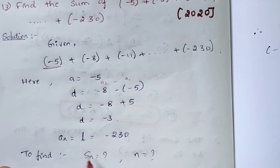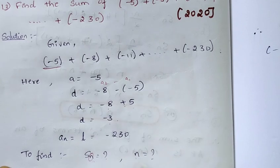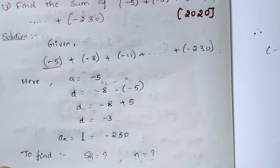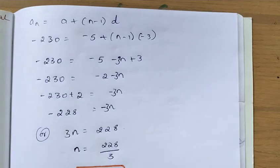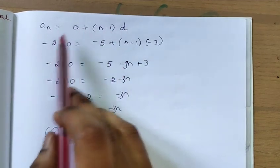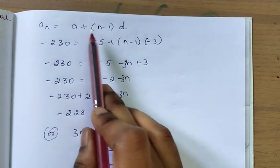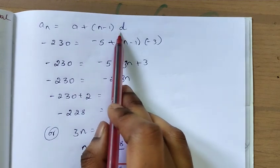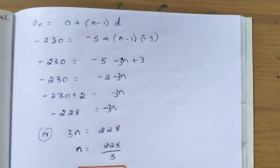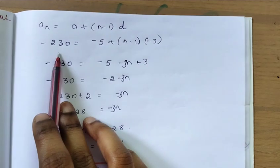Since n is also unknown, we first find the value of n. Using the general formula for the nth term: An = a plus n minus 1 into d. The nth term, that is the last term, is -230.